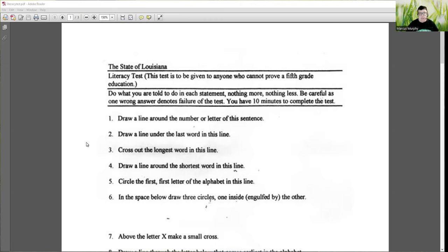Draw a line around the number of letter of this sentence, easy enough. Draw a line under the last word in this line, easy enough again. Cross out the longest word in this line, easy enough again. So far they're reasonably easy, you'd have probably used up a minute or two. Of course it does depend on your own level of literacy to start with, and many black people in that era didn't exactly have great literacy.